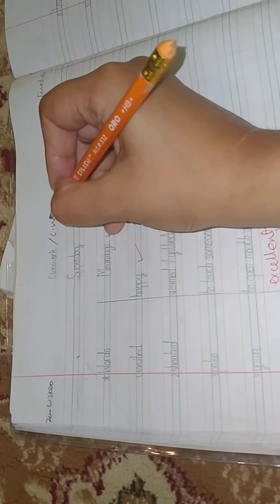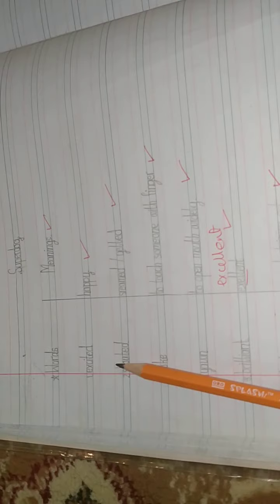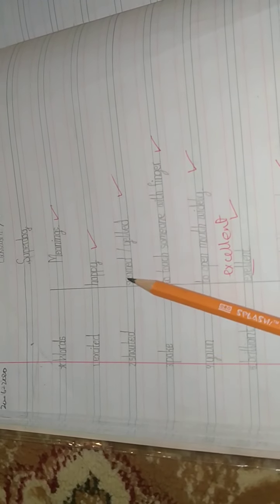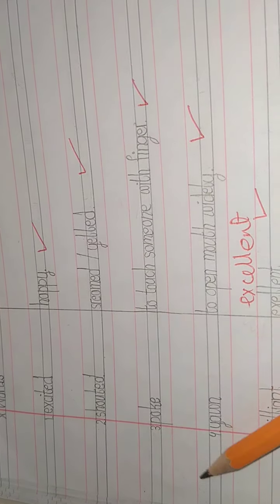Number one is excited. Excited means happy. Shouted means screamed or yelled. Poke means to touch someone with finger, like it's called poking.